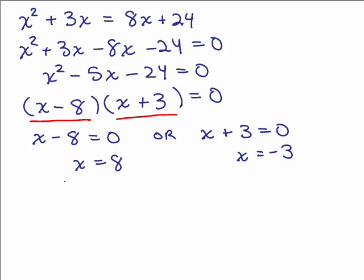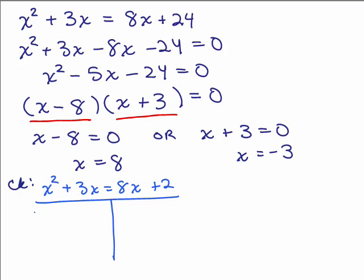Now let's check this X equals 8 in the original. We're going to take the original problem, X squared plus 3X equals 8X plus 24, and plug in 8 into both sides. X squared, that would be 8 squared, I'm going to write that as 8 times 8 plus 3 times 8. So that's 64 plus 24, which is 88.